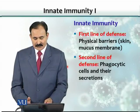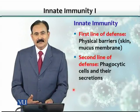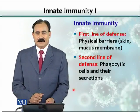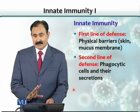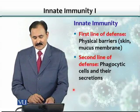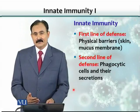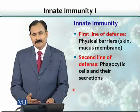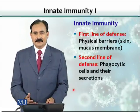The second line of defense also includes natural killer cells. The third line of defense is essentially the adaptive immune response — acquired immunity — which is very specific. So there are three lines of defense: first, second, and third, with the third being the adaptive immune response.